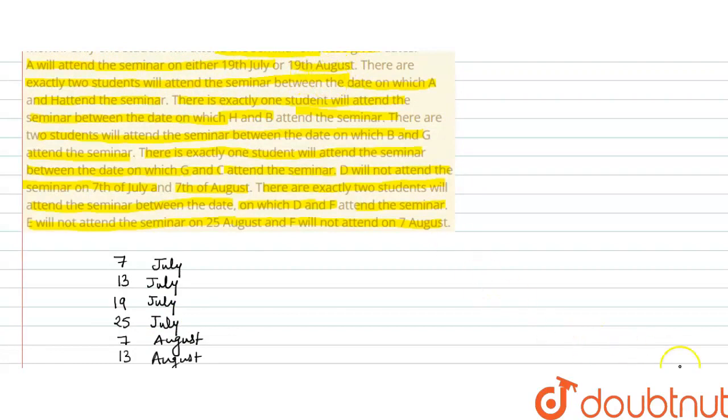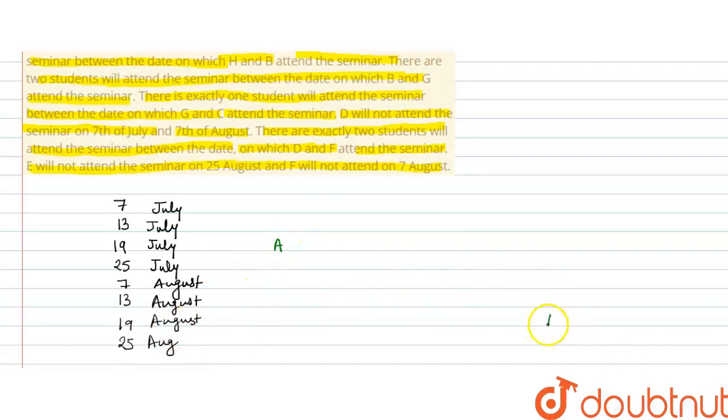A will attend the seminar on either 19th July or 19th August. A 19th July ko ya phir 19th August ko seminar attend karega. There are exactly two students who will attend the seminar between the dates on which A and H attend.